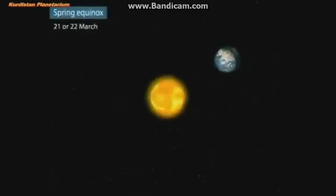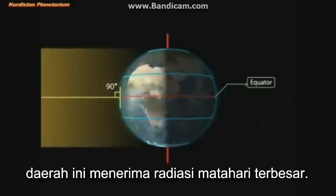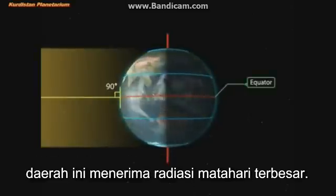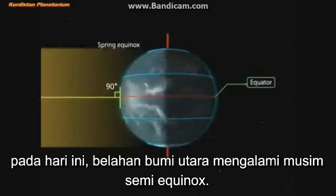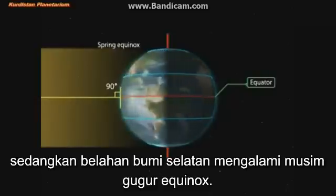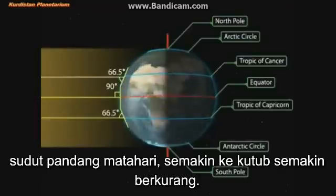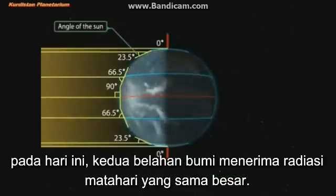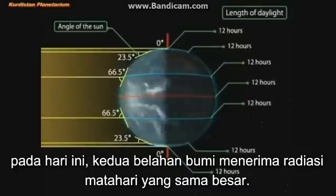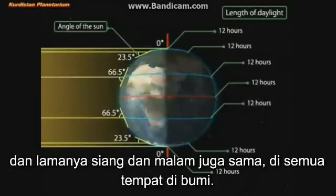Spring Equinox: On the 21st or 22nd of March, the overhead sun is over the equator. The equator receives the largest amount of solar radiation. At this time, the Northern Hemisphere is in the Spring Equinox, while the Southern Hemisphere is in the Autumn Equinox. The angle of the Sun decreases towards the poles. On this day, the two hemispheres receive a similar amount of solar radiation, and the length of day and night is the same at all places on the Earth.